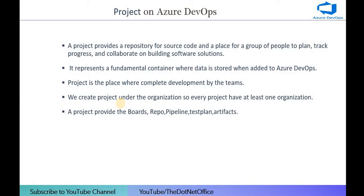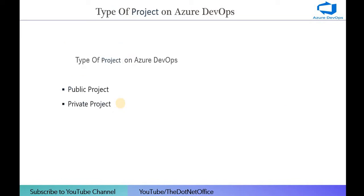What is a project in Azure DevOps? A project provides a repository for source code and a place for a group of people to plan, track progress, and collaborate on building software solutions. A project is the place that contains all services — boards, repos, pipeline, test plans, and artifacts. Every project must have at least one organization, and all development work is done within the project.